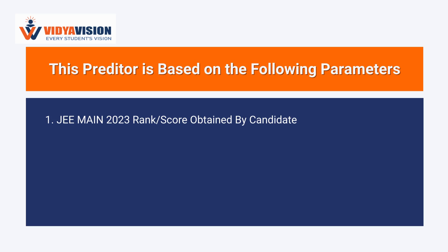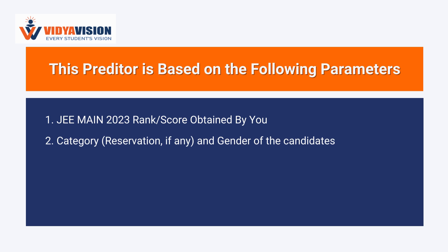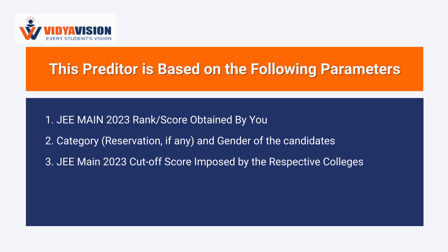The predictor is based on various parameters like JEE Main 2023 rank, score obtained by the candidate, category, reservation if any, and gender of the candidates. It also considers the JEE Main 2023 cutoff score imposed by the respective colleges, and previous year's JEE Main counseling data from 2022.